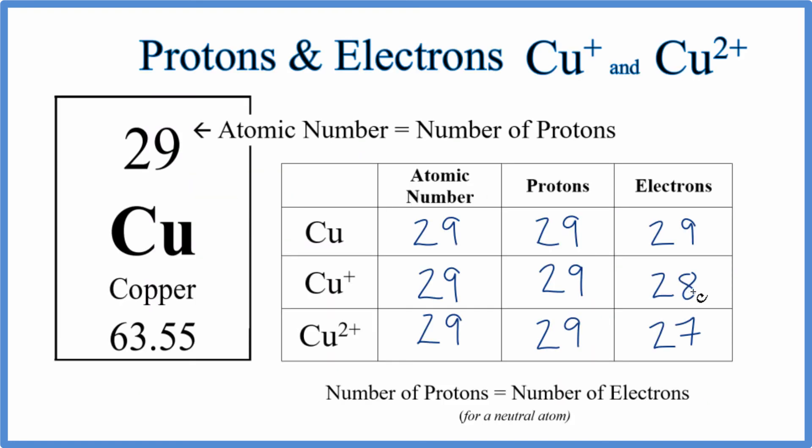If you need help finding the number of neutrons for the different isotopes of copper, there's a link in the description of this video to help you with that. This is Dr. B with the number of protons and electrons for Cu plus and Cu 2 plus. Thanks for watching.